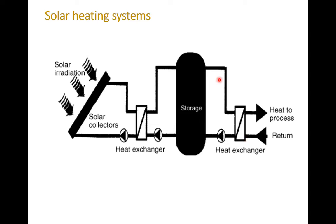This hot water can then be pumped to the application or process. And of course, here we can also have some kind of heat exchanger between the incoming cold water and the outlet heat. So this may be a very complex system, but there are simpler systems that don't have these two heat exchangers. In that case, it's just composed of a solar collector, storage, and the application. Of course, we should have some kind of control to manage the flow between the solar collector and the application.